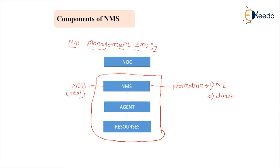NMS — the Network Management System — plays the role of a manager. NMS is a device controlled by a software engineer or IT manager, and they face different types of challenges while designing or controlling the network. NMS can be controlled by the NOC, as NOC is present at a higher level. But inside the network, the highest level component is NMS itself, which is able to control agents and resources.